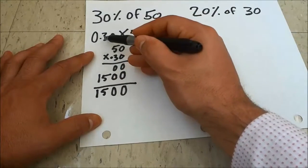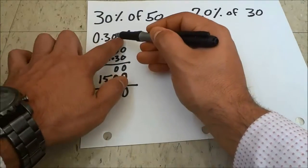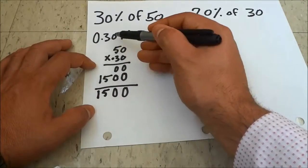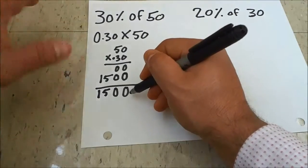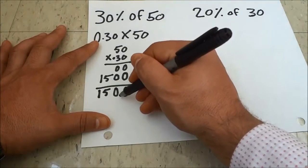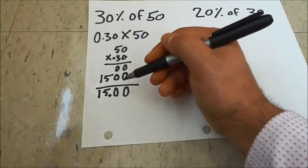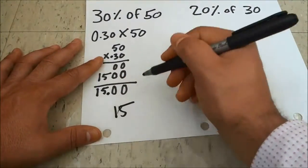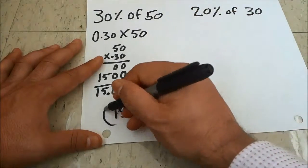Because the decimal was two spaces from the right in the original number, I'm going to take the imaginary decimal and move it two spaces from the right. 15 is my answer. That is what 30% of 50 is. 30% of 50 is 15.